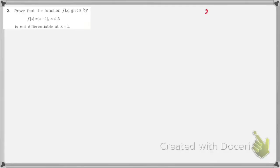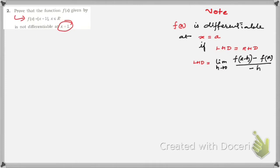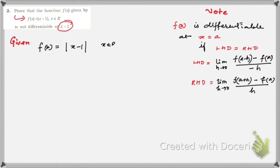Now let us solve question number two. We need to prove that this function is not differentiable at x = 1. A function f(x) is differentiable at x = a if the left-hand derivative equals the right-hand derivative. The left-hand derivative is the limit as h→0 of [f(a−h) − f(a)] / (−h), and the right-hand derivative is the limit as h→0 of [f(a+h) − f(a)] / h.